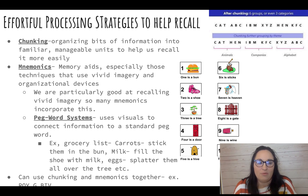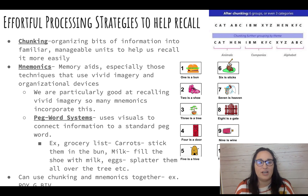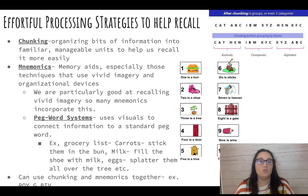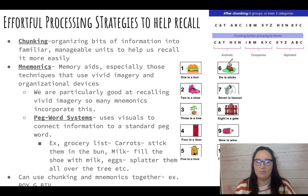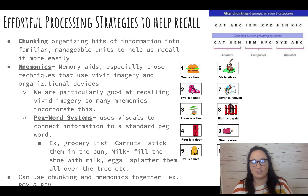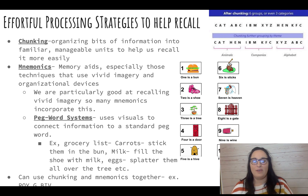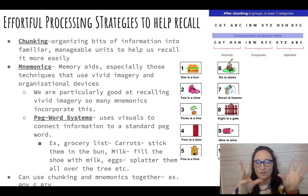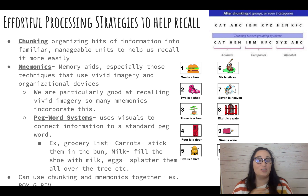Effortful processing strategies to help recall. Chunking is taking bits of information and putting them into more manageable units. So if our magic number is seven plus or minus two, let's make it work for us. Instead of remembering random individual items like cat, ABC, IBM, XYZ, you can group them into things you know — cat and hen are animals, IBM and KFC are both companies. Chunk those together. If my working memory space is about seven bits of information, how can I maximize each of those seven spaces?